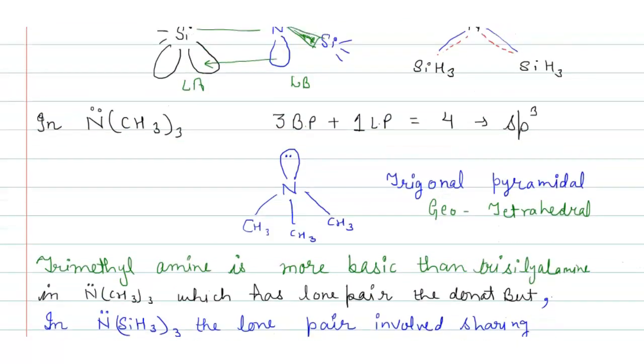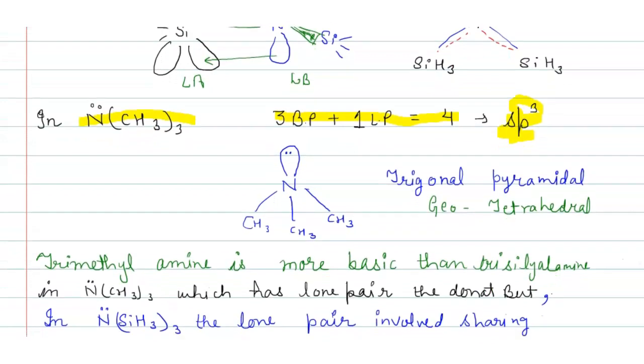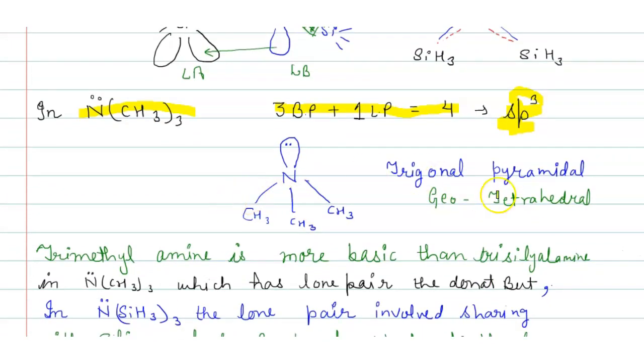Now in the case of N(CH3)3, trimethylamine, which has 3 bond pairs, 1 lone pair, and 4 total pairs, the hybridization is sp3. The structure is trigonal pyramidal and geometry is tetrahedral.